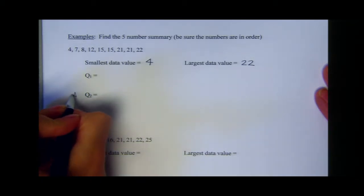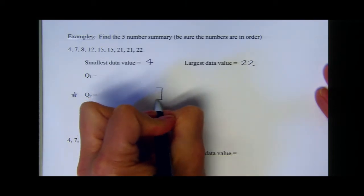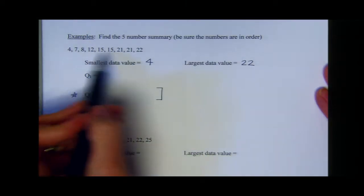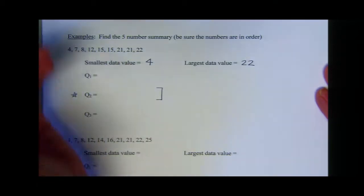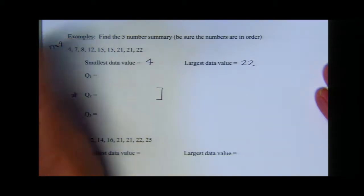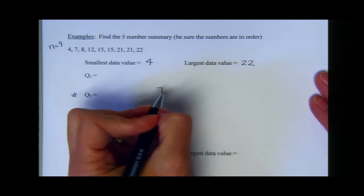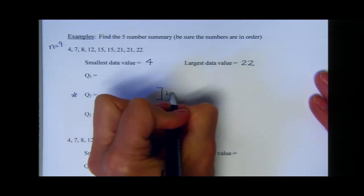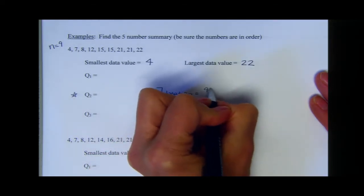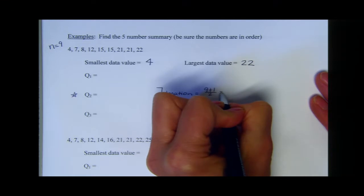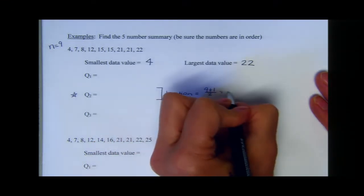Now we're going to find our quartiles — we always find quartile two first, and remember, that is your median. There are nine numbers in this dataset. To find the location of the median: n plus one divided by two, so nine plus one is ten divided by two is five. So the median is the fifth number, which is 15. So quartile two is 15, and that gives us four numbers below and four numbers above.